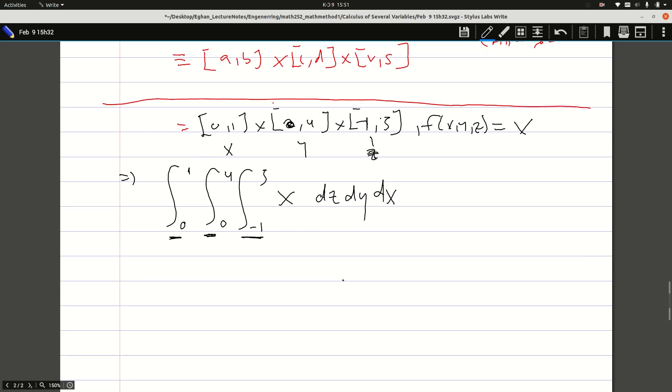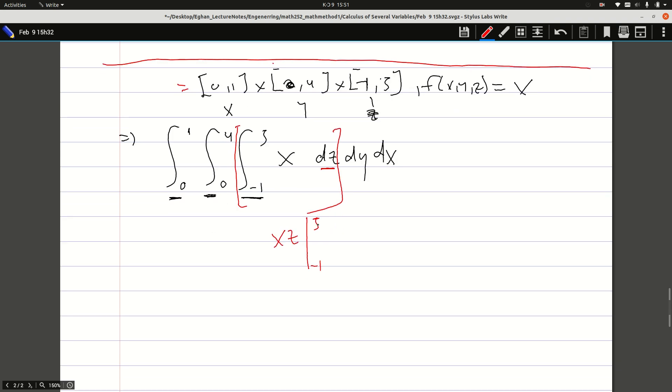To integrate this, I take the first inner integral with respect to z. Since the integral variable is z, I assume x as a constant. I get xz evaluated from -1 to 5. This is a definite integral, so I substitute 5 into z, giving me 5x minus x times -1, which is 4x. That's the final result for the first integral.